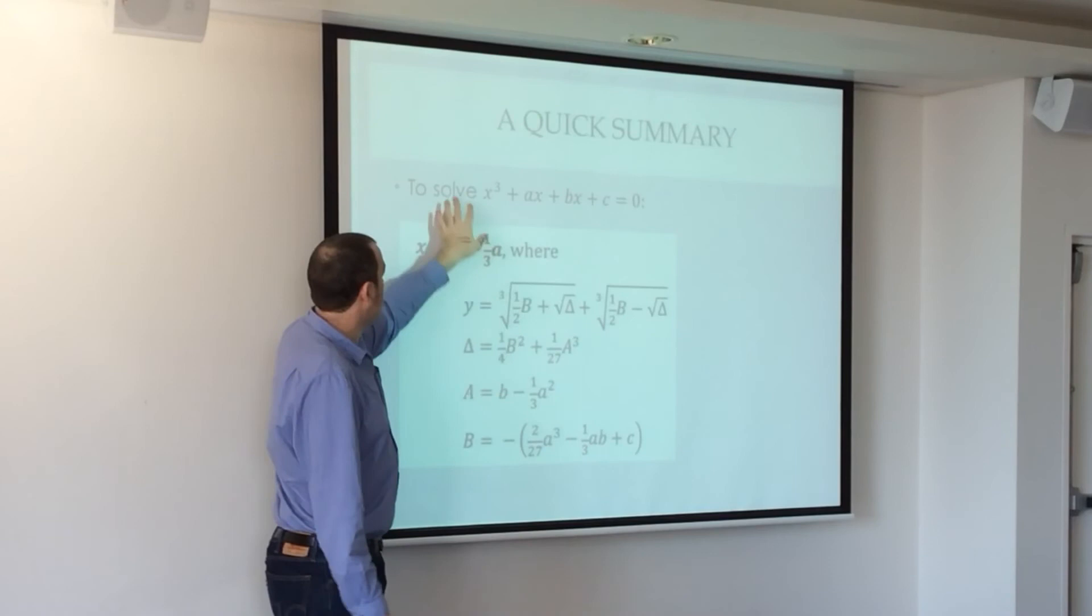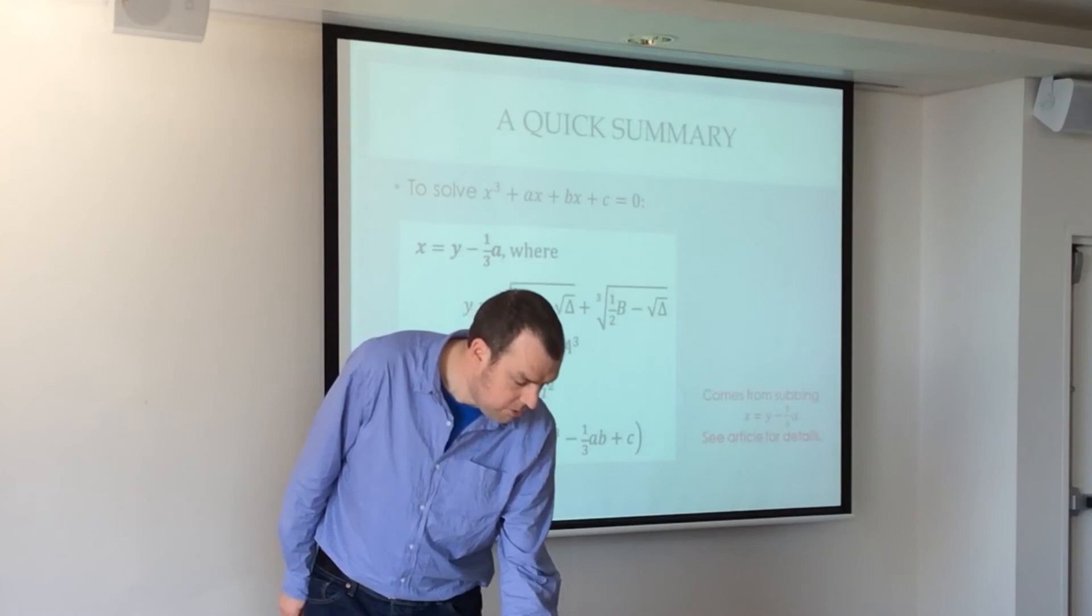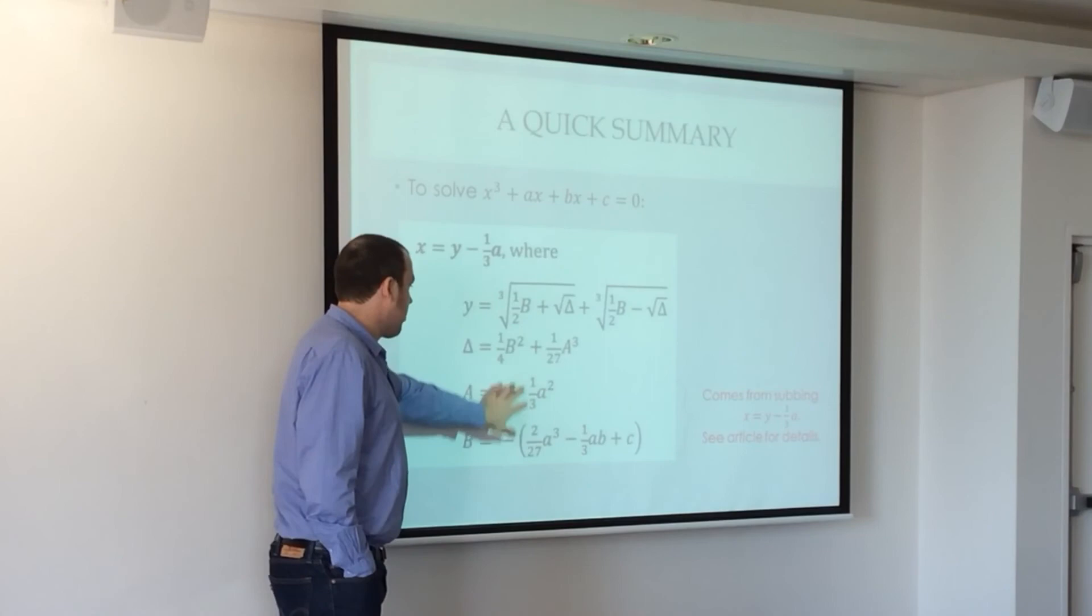And to work it out, you go in reverse, right? You have to work those out, because you've got your a, b, and c. Then you can work out your delta, because you've got your capital A and capital B. Then you can work out your y, because you've got your b and your delta. Then you can work out your x, because you've got your a, as demonstrated here. Well, soon.